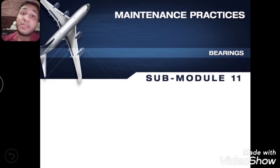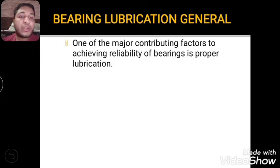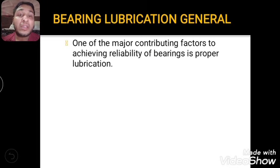So the topic is bearing, and in bearing we are going to see bearing lubricant general — meaning which properties are important and what qualities a lubricant we are selecting should have. One of the major contributing factors to achieving reliability of bearing is proper lubrication. The bearing carries a continuous load and minimizes friction.